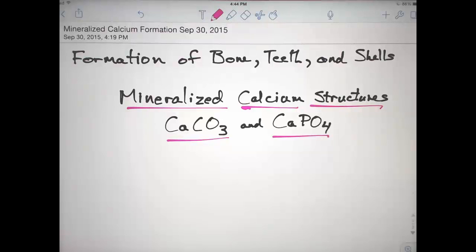An important process in many animals is the ability to produce mineralized calcium structures, structures made of calcium carbonate or calcium phosphate.